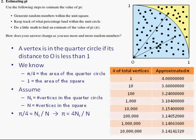This is the result. As the number of total vertices increase, we can see that the approximated pi is closer and closer to its real value.